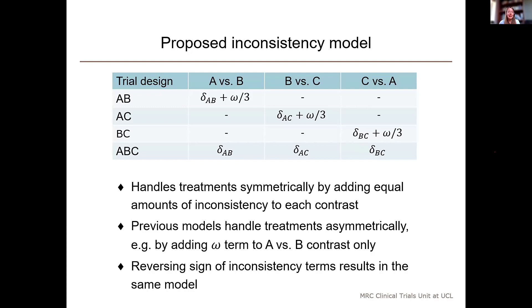Previous inconsistency models handled treatments asymmetrically, for example, by adding the inconsistency term to only one of the contrasts in the loop and not allowing the two-arm and three-arm trials to differ for the other contrasts. So, our inconsistency terms here add up to omega around the loop. And if we reverse the sign of the inconsistency terms, that would result in the same model.